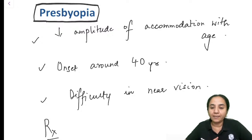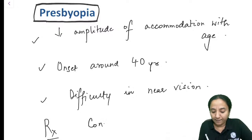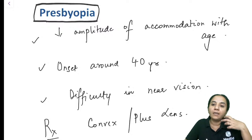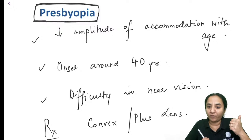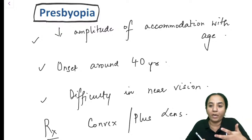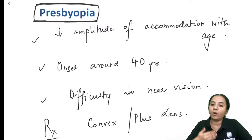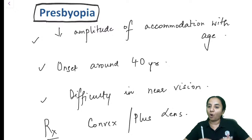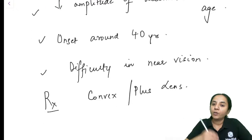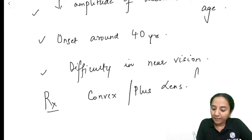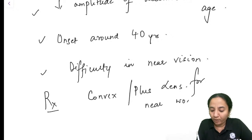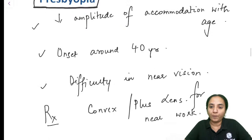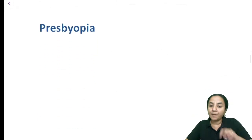To help presbyopic patients, we give them plus lenses — convex lenses — for near work only. This is because we need to increase their refractive power for near objects, which the eye would normally do physiologically through accommodation. Since the eye can no longer accommodate adequately, we supply the extra power externally via convex or plus lenses used only for near work.